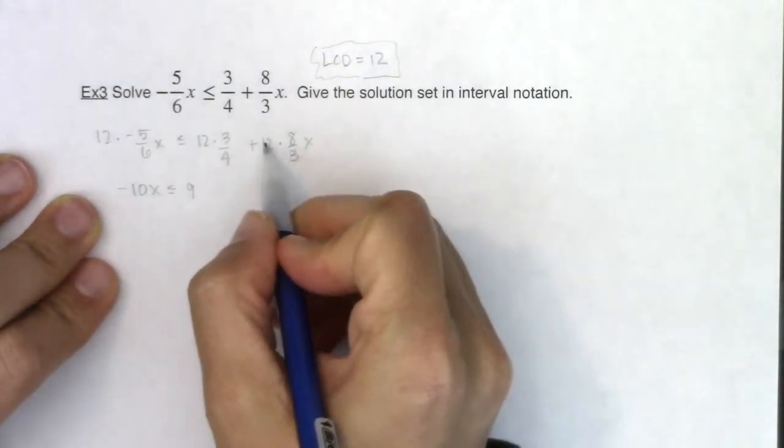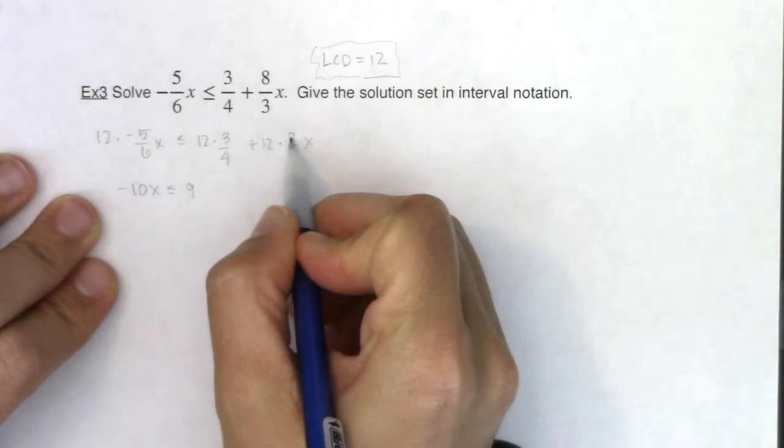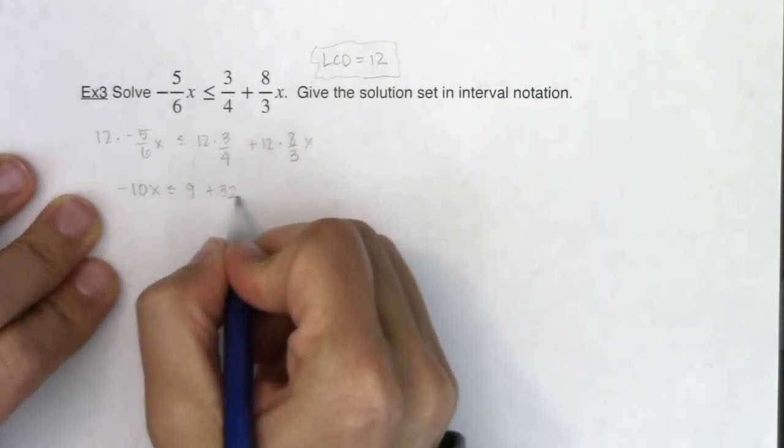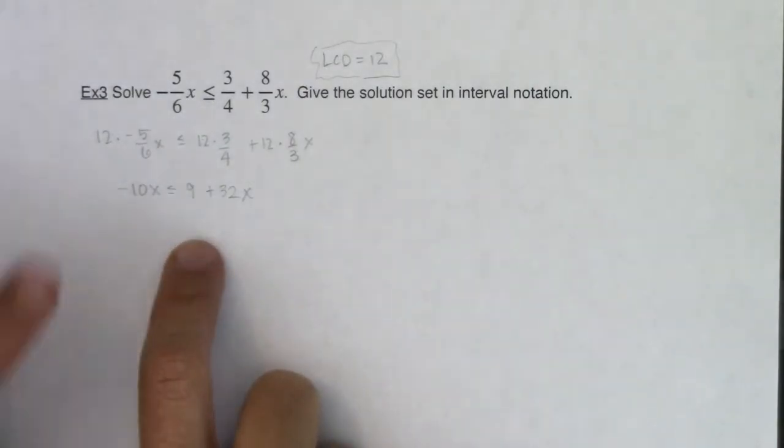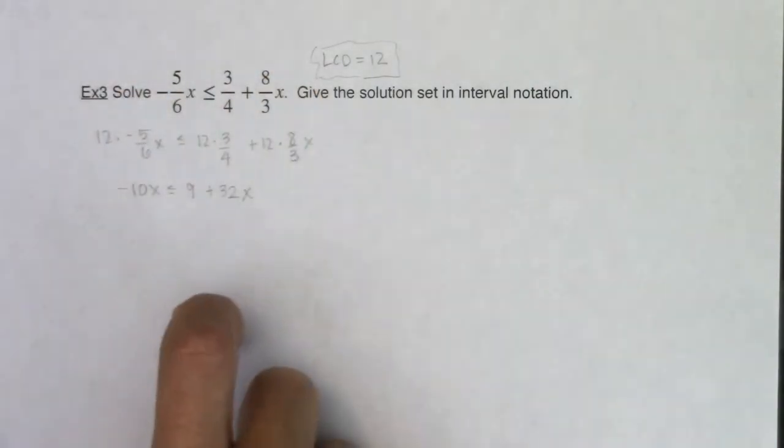3 goes into 12 four times, 4 times 8 is 32, 32x. All right, and that looks a lot simpler to solve than all this fractional work.